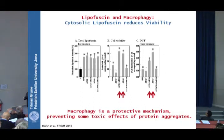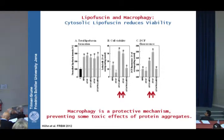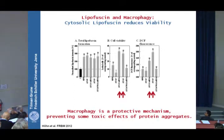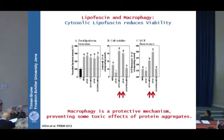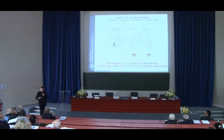Why does this happen? Why do we need to actively transfer — macroautophagy requires energy — this waste material into the lysosomes? The answer is simple: if you block macroautophagy and the transport of protein aggregates into the lysosomes, the cells start to die. Macroautophagy functions as a protective mechanism — a last line of defense against protein aggregation when the proteasome is no longer degrading proteins.